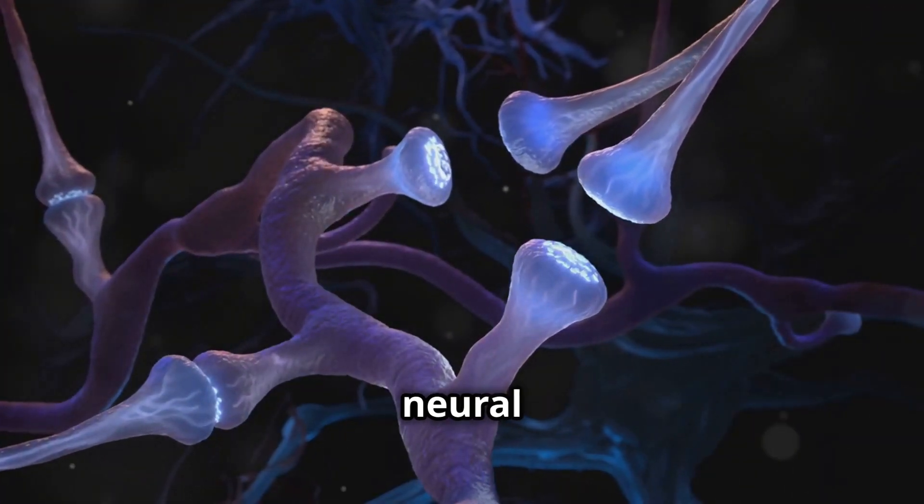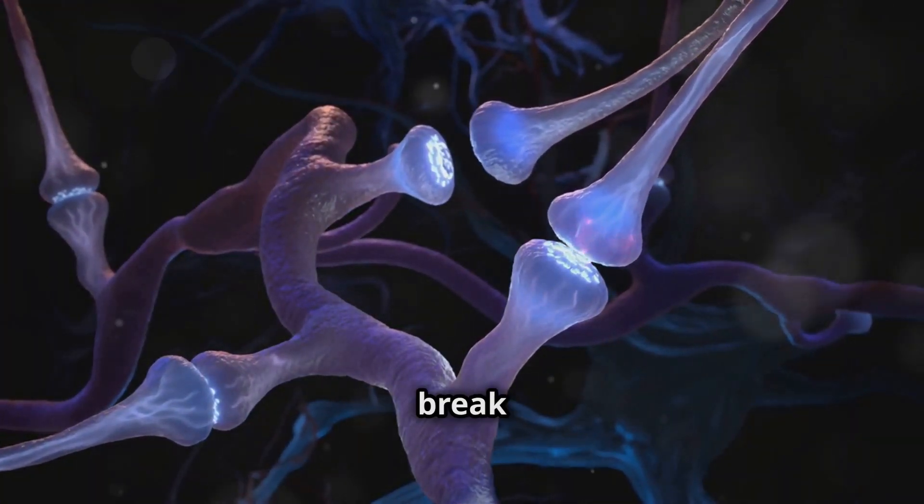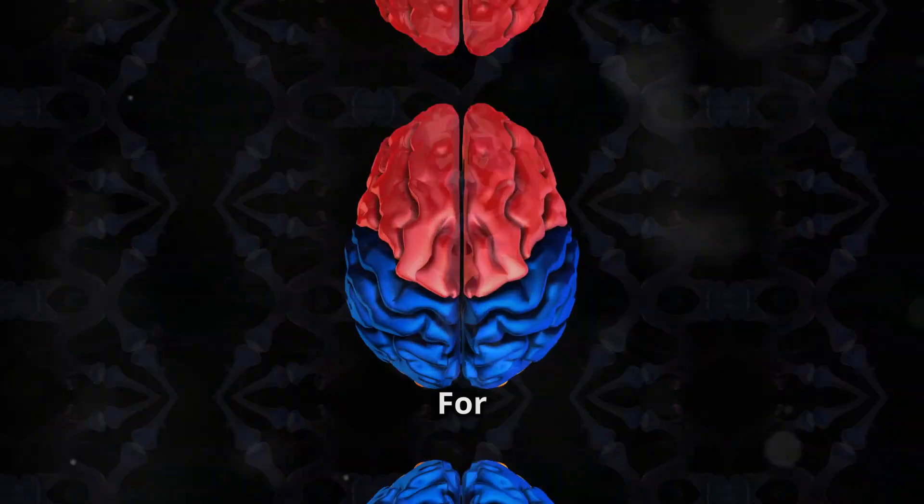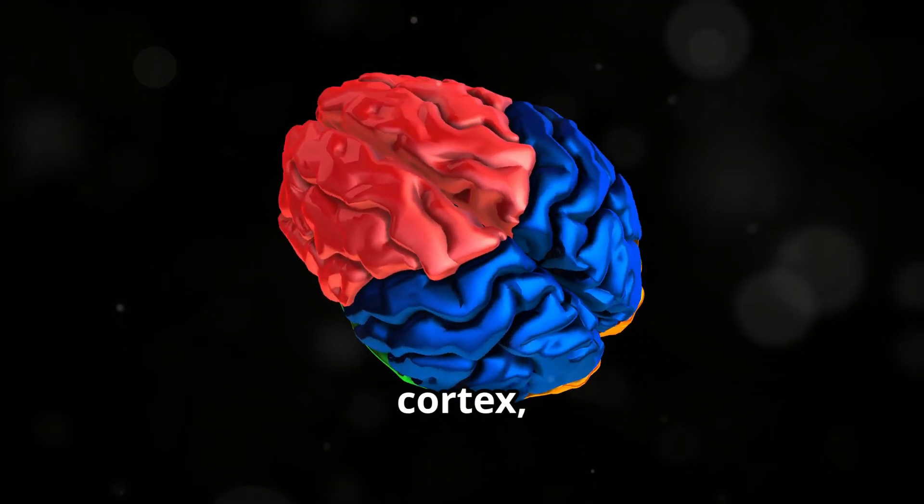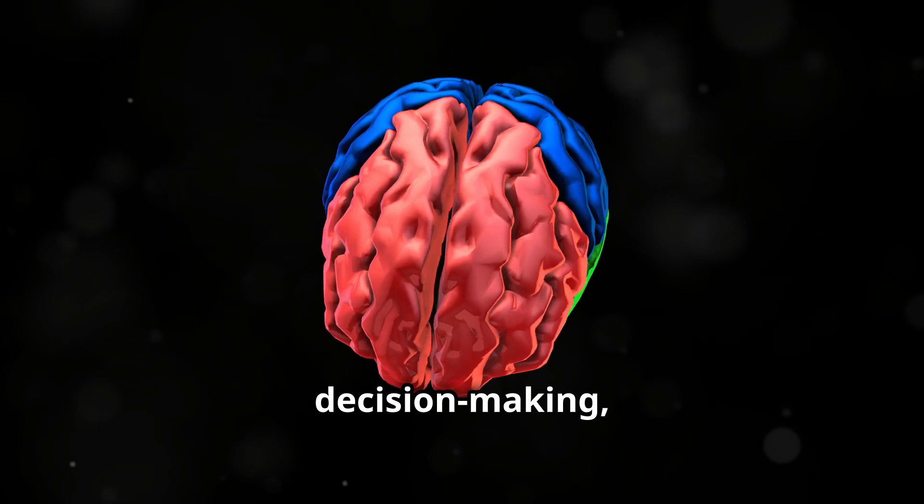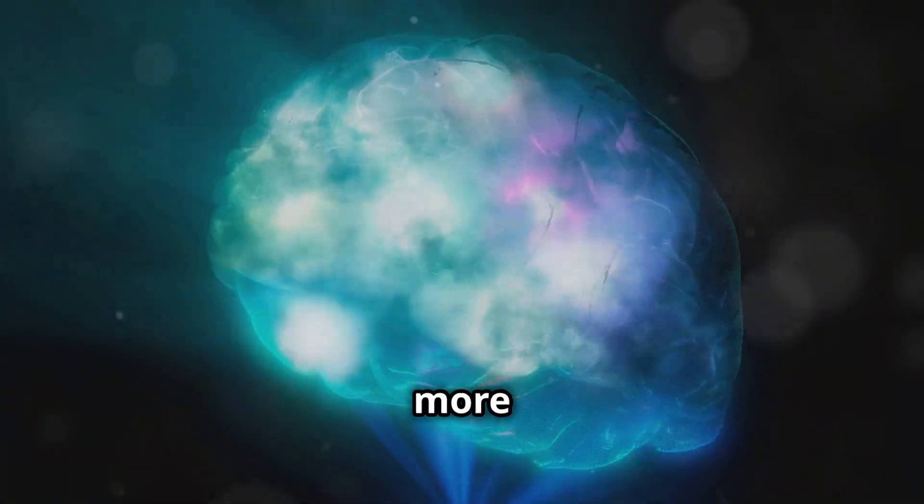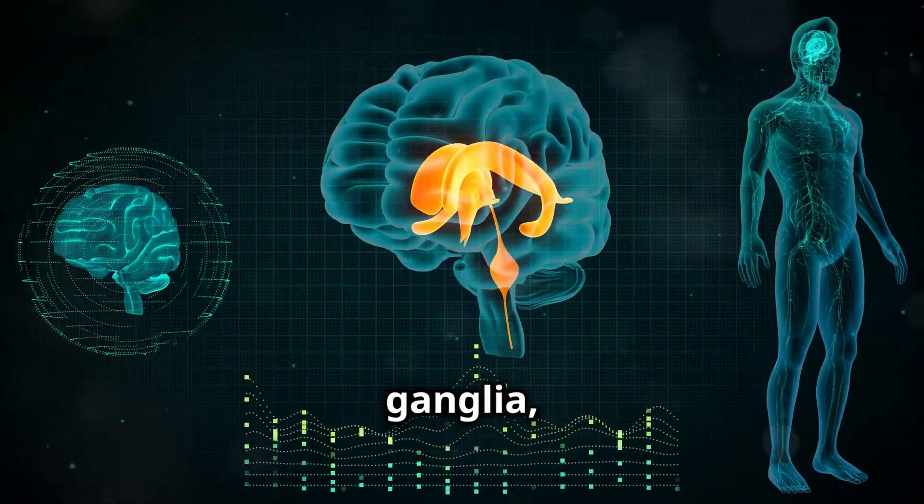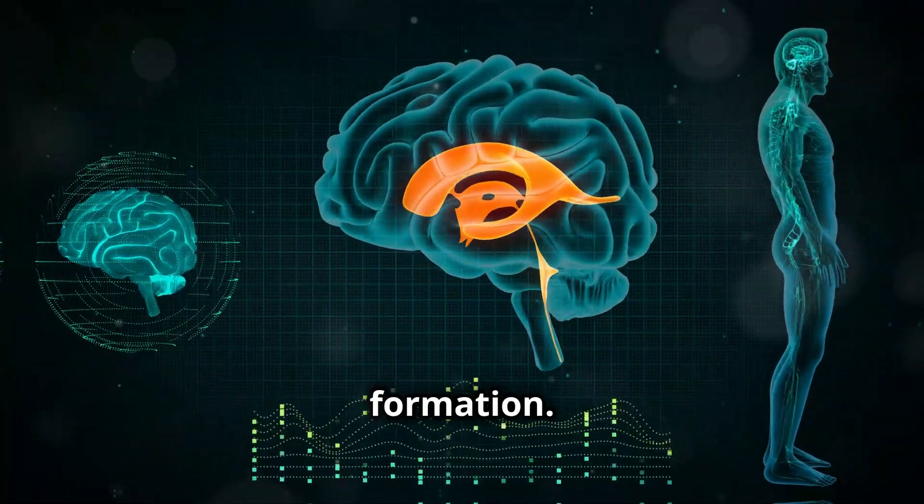Repeated behaviors create strong neural pathways, making it harder to break free from bad habits. For instance, the prefrontal cortex, responsible for decision making, often loses out to the more primal areas like the basal ganglia, which governs habit formation. However,